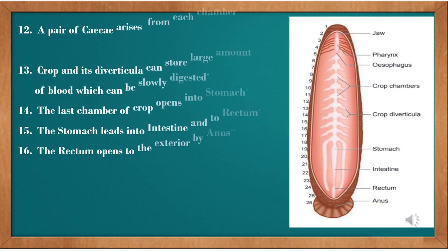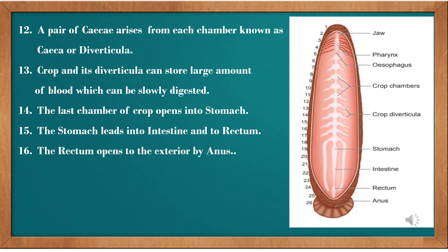The next is the crop diverticula. From each crop chamber arises a pair of outgrowths called diverticula or caeca. Crop and diverticula together store a large amount of blood, which gets digested very slowly.